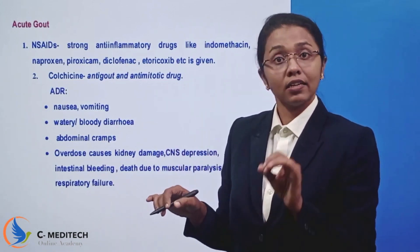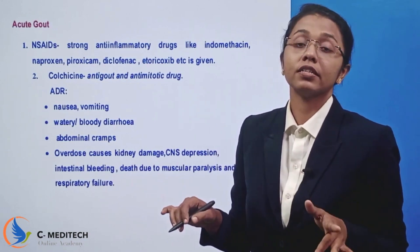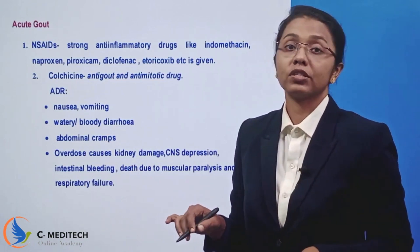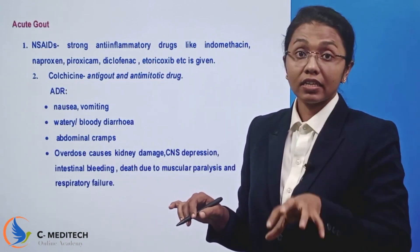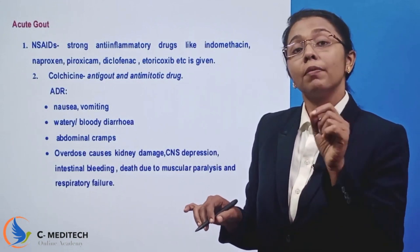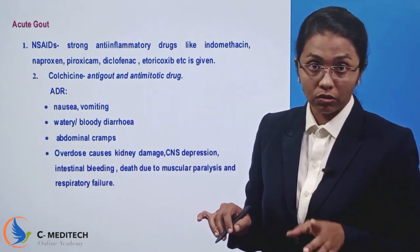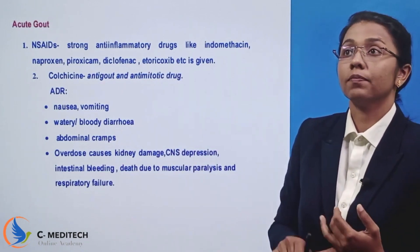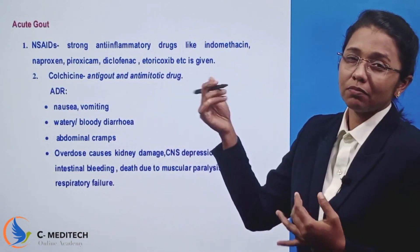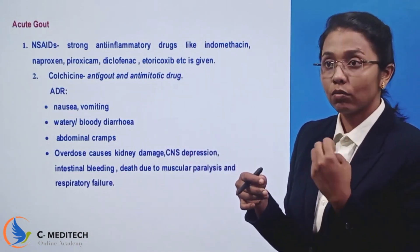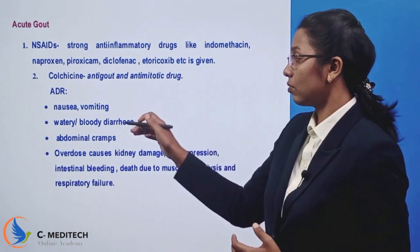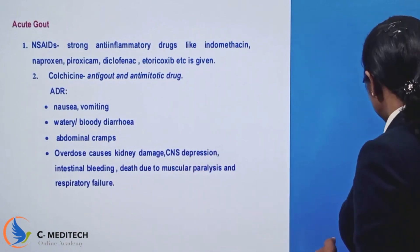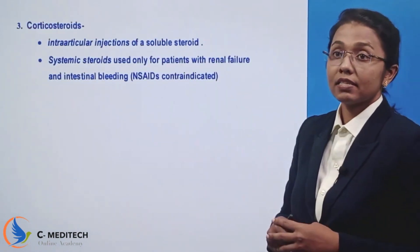Colchicine is used for acute gout and also in chronic conditions. Its mechanism of action is its anti-mitotic effect — it inhibits cell division and mitosis. Adverse drug reactions of colchicine include abdominal cramps, watery diarrhea, bloody diarrhea, nausea, vomiting. In overdose: kidney damage, CNS depression, and intestinal bleeding.